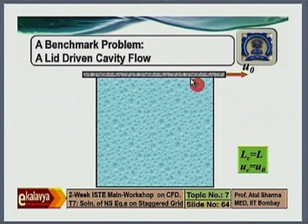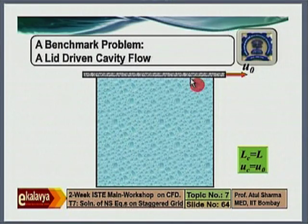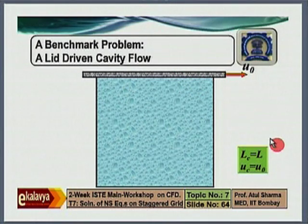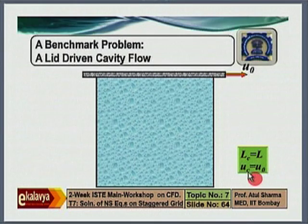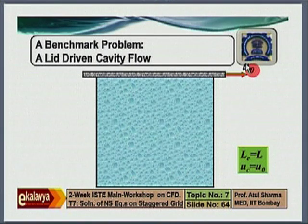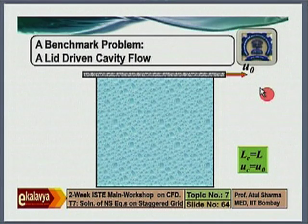The first problem solved in yesterday's lab session was an isothermal flow problem — the lid-driven cavity flow. Note that the characteristic length scale is the size of the square cavity, and the characteristic velocity is the velocity with which the lid is moving. In this problem, there is only one length scale and one velocity scale, so it is easy to decide the characteristic length and velocity scale.